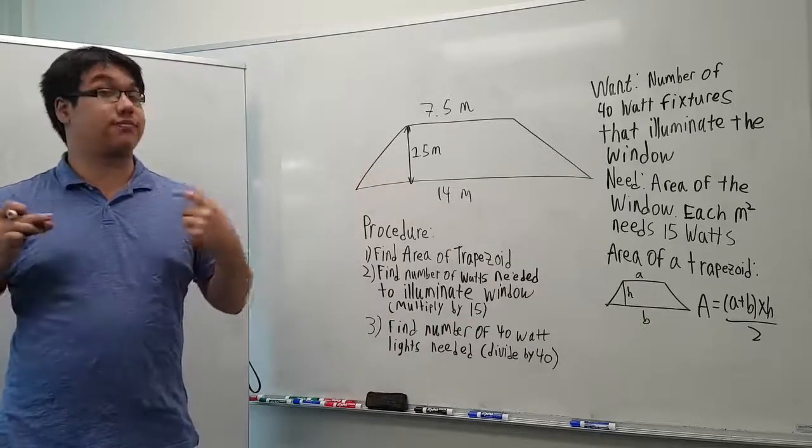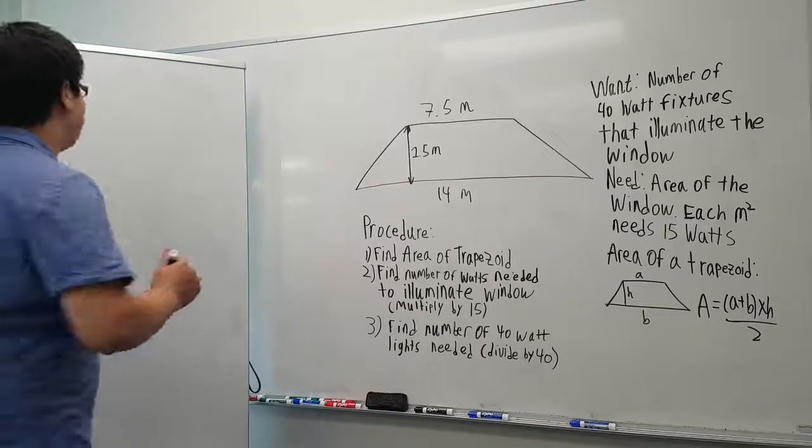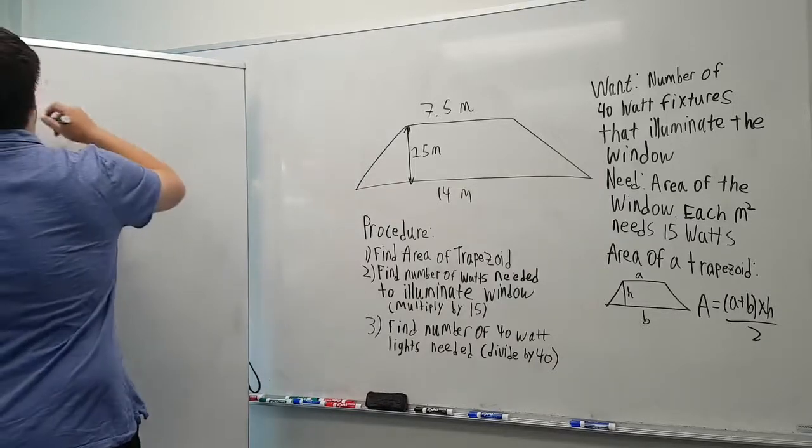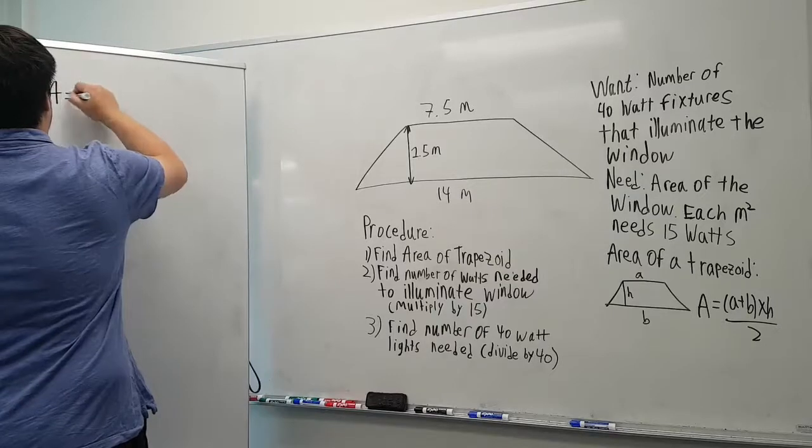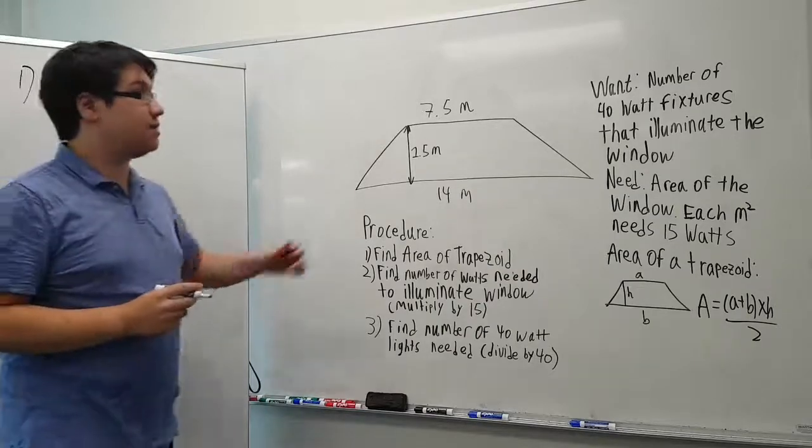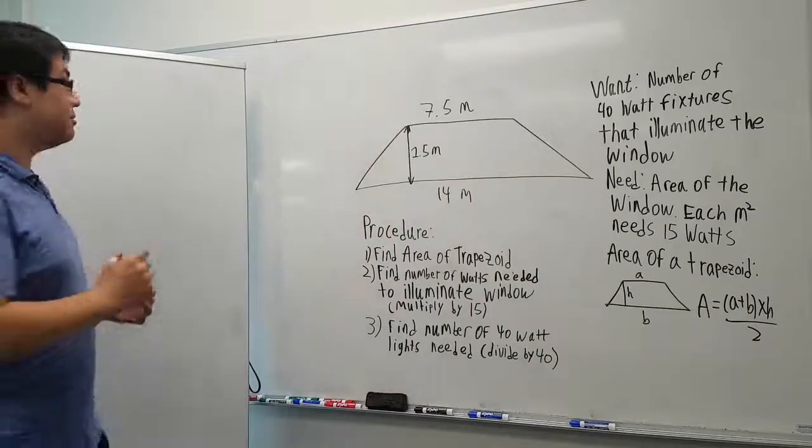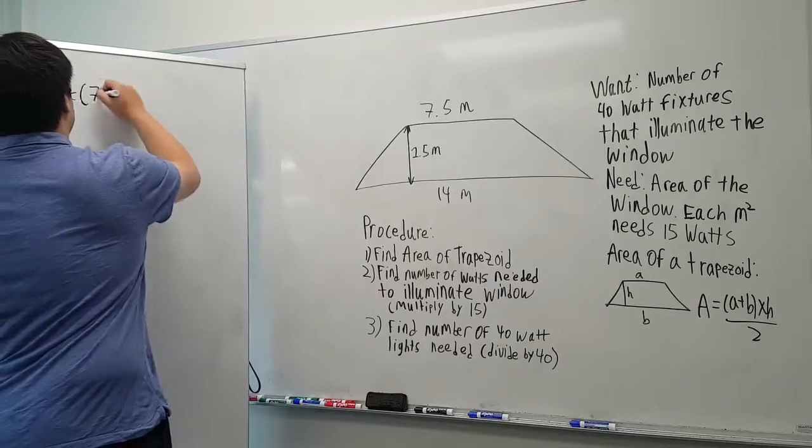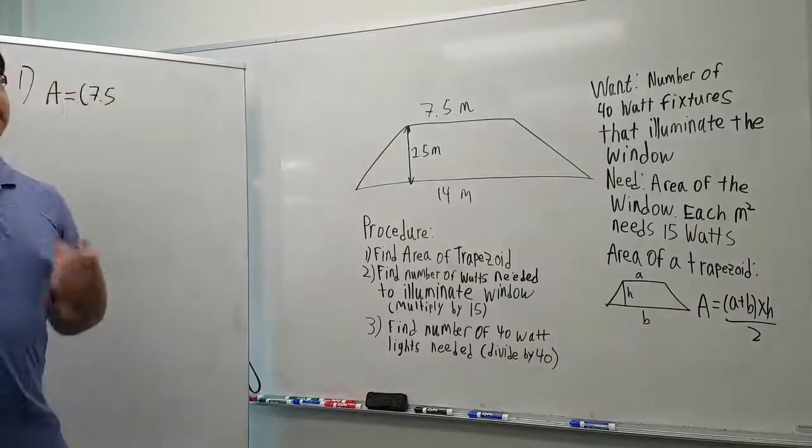So I'm going to start by finding the area of the trapezoid. In this case, 7.5 is a and 14 is our b.